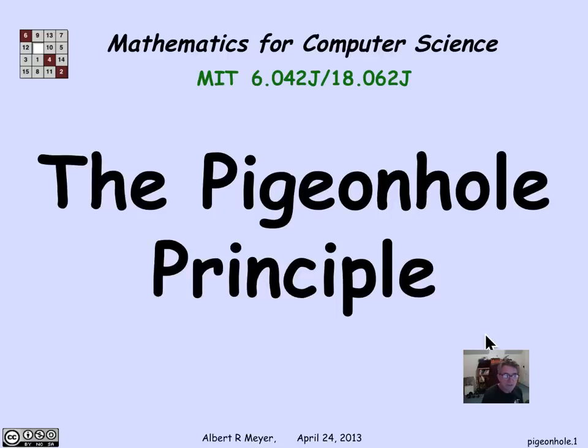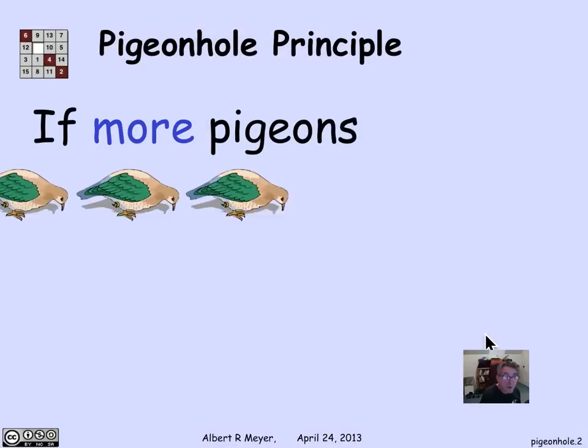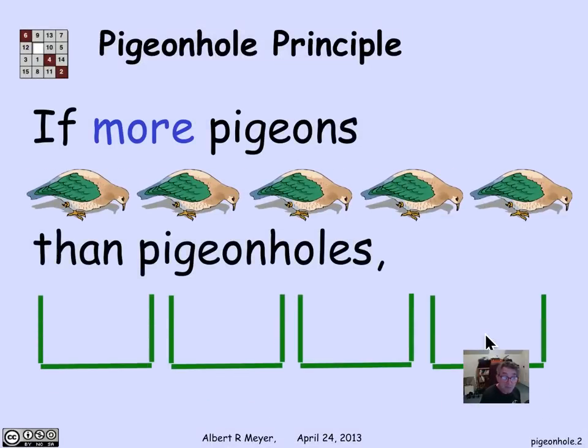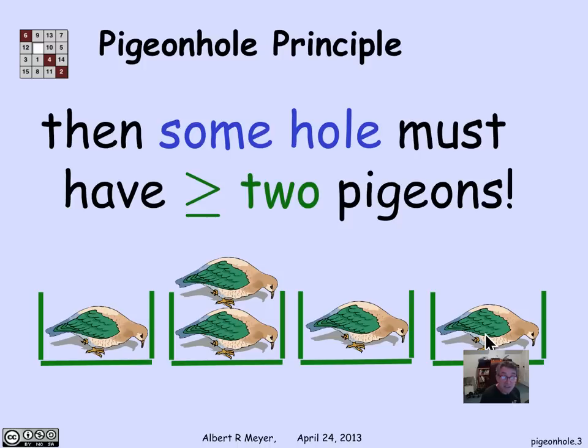The pigeonhole principle is a counting principle that's so obvious that you may not have noticed that you're using it. In simple form, it says that if there are more pigeons than pigeonholes, then you have to have at least two pigeons in the same hole. We'll get some mileage out of that shortly.